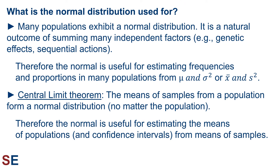So what is the normal distribution used for? There are two main uses. First, many populations exhibit a normal distribution. A normal distribution of values is a natural outcome of summing many independent factors — for example, multiple genetic effects that contribute to a trait, or sequential actions that lead to an outcome, will tend to generate normally distributed traits or outcomes. Therefore, the normal distribution is useful for estimating frequencies and proportions in many populations from just knowing the mean and variance, or estimating the population mean and variance from sample statistics. For example, to find what range of heights 95% of people fall within, we could just calculate the mean and variance and use the normal distribution.